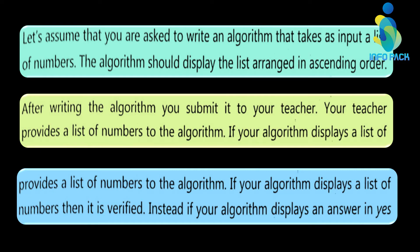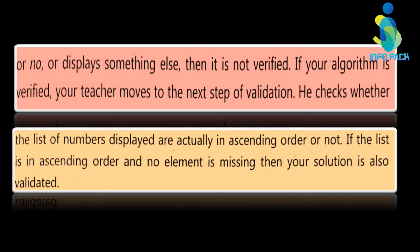But if the algorithm gives a yes/no answer or some other unexpected output, the solution is not verified. If the algorithm is verified, it moves to the next step: validation. The teacher then checks whether the numbers displayed are actually in ascending order, no elements are missing, and all numbers are present. If all conditions are met, the solution is validated.